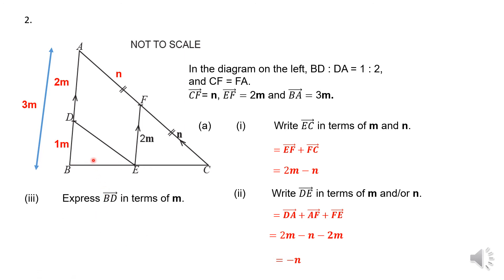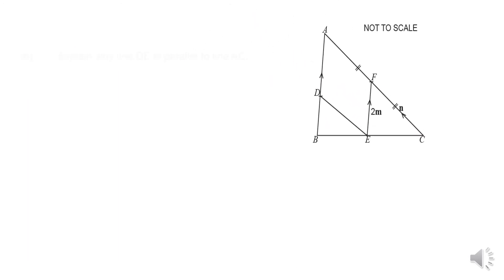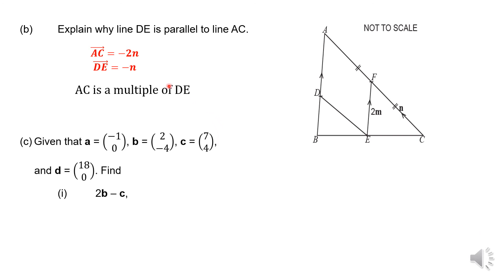Then, we had to express BD in terms of M. Well, that's very easy. You can see it's just going to be M. So let me bring in my diagram again. And now you're supposed to explain why DE is parallel to AC. Well, if you had to look at what AC was, we already determined AC is minus 2N, and then DE was minus N from our previous question. So this is basically that AC is a multiple of that. It's a multiple of DE. One of the problems that students are doing here, they go and say that AC is parallel to DE. That information is already given to you. You need to explain why. So that multiple there makes it to be parallel.